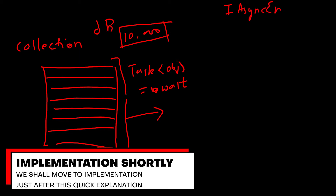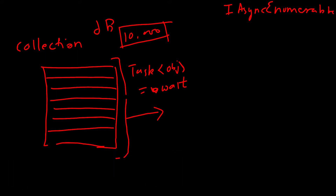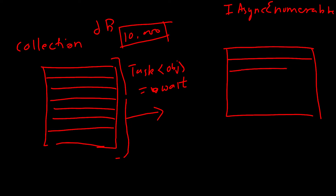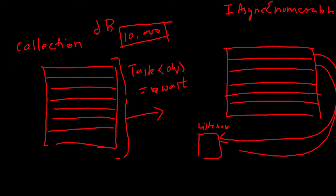The technical term here is IAsyncEnumerable, and that's the base interface we return. What happens is each record, as it comes from the database, will be immediately moved back to the original caller. There is a listener actually listening to these records — as soon as the first record comes it will be sent out, when the second record comes it will be sent out again, and likewise.